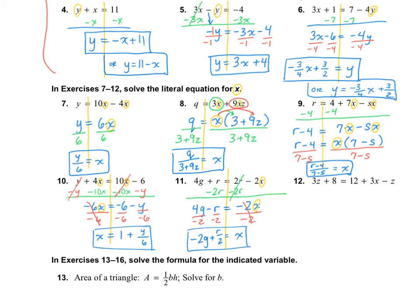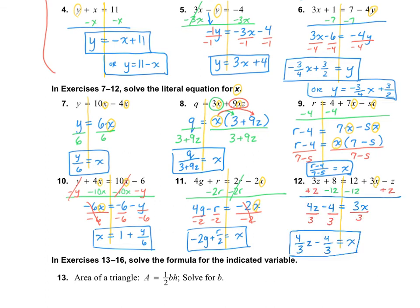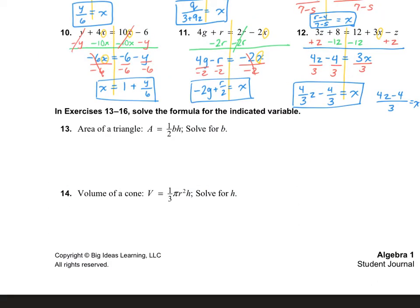Last one in this set — I'd like you to try number 12 on your own. I got 4 thirds Z minus 4 thirds. If you decided to write it as 4Z minus 4 all over 3 equals X, I would accept that as well.